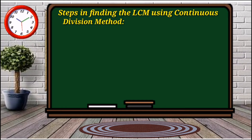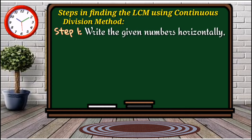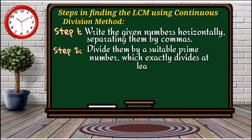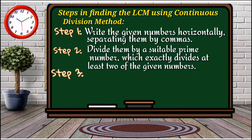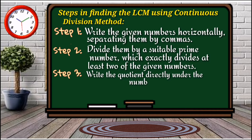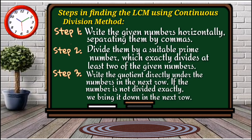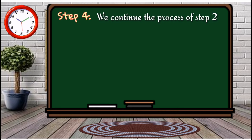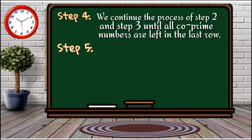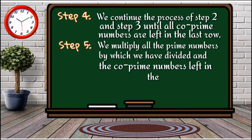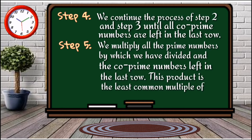To find the LCM using continuous division, follow these steps. Step one: write the given numbers in a horizontal line separated by commas. Step two: divide by a suitable prime number that exactly divides at least two of the given numbers. Step three: put the quotient directly under the numbers; if a number is not divisible, bring it down. Step four: continue until all co-prime numbers remain in the last row. Step five: multiply all the prime divisors and the co-prime numbers left — that product is the LCM.